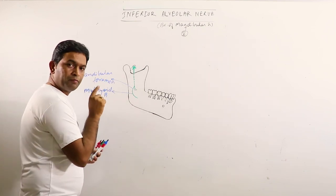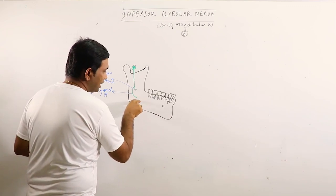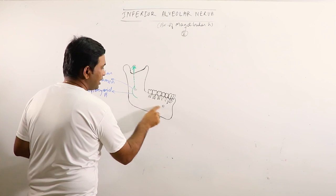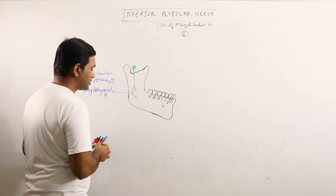So, this mylohyoid nerve pierces the sphenomandibular ligament and then runs anteriorly to supply the mylohyoid muscle and the anterior belly of the digastric muscle.